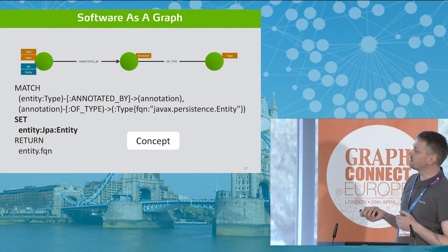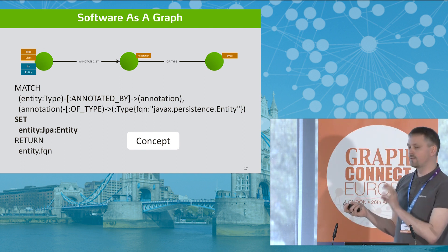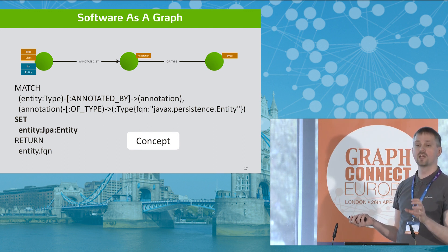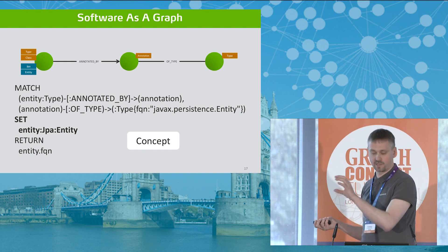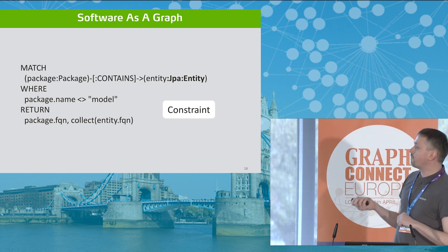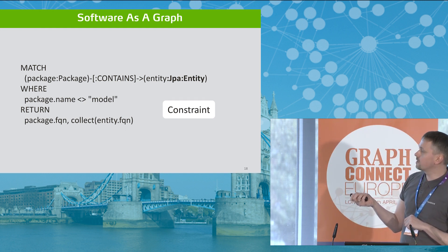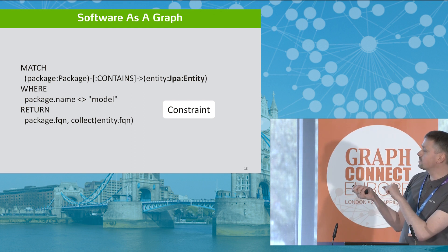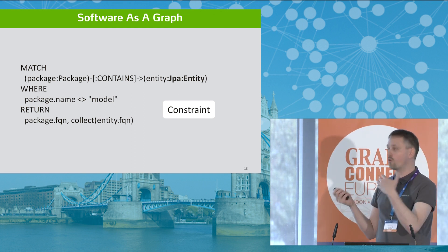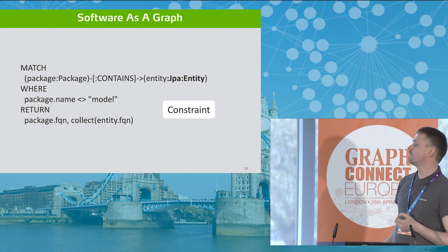In the context of JQAssistant, we call this a concept, because it usually represents a concept of your application — its entities, but also things like controllers, services, or whatever. Based on these concepts you can create so-called constraints. You can say: give me all packages that contain entities where the name is not 'model' — that's a violation if your coding convention says all entities should be in a model package.